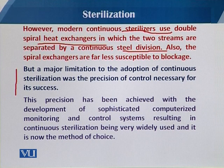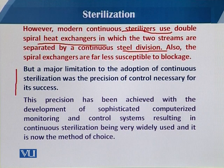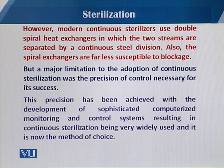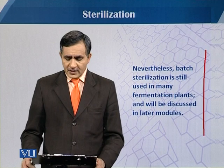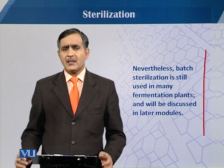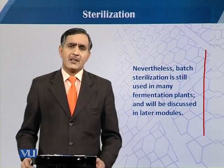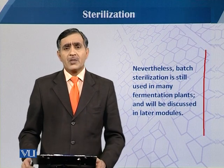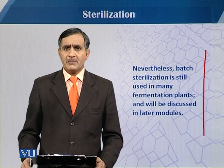The major limitation to the adoption of continuous sterilization was the precision of control necessary for its success. This precision has been achieved through the development of sophisticated computerized monitoring and control systems, resulting in continuous sterilization becoming very widely used and now the method of choice in industrial fermentations. Nevertheless, batch sterilization is still used, primarily due to the lower capital cost, and most industrial fermentation facilities continue to use it.